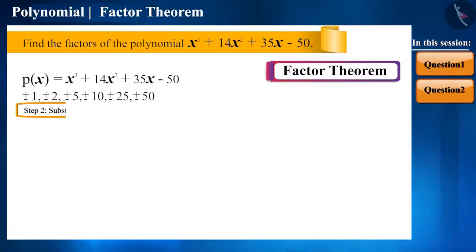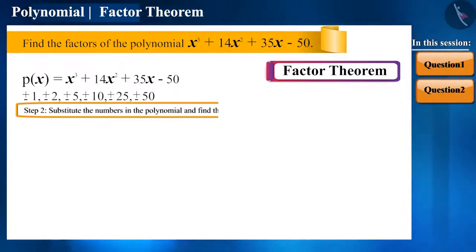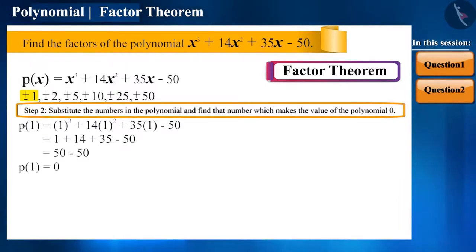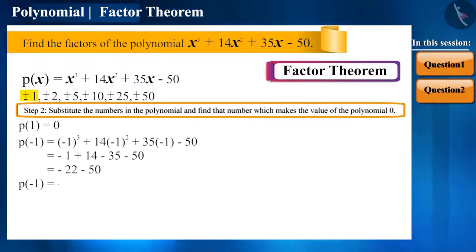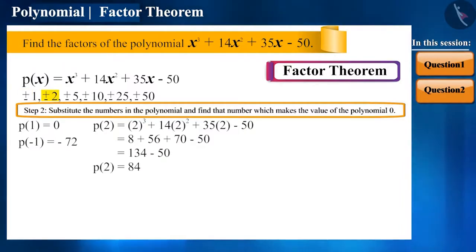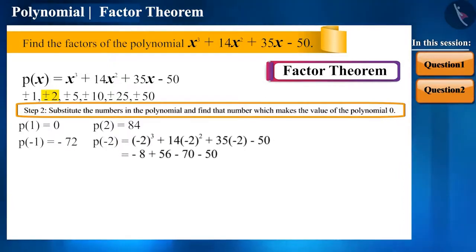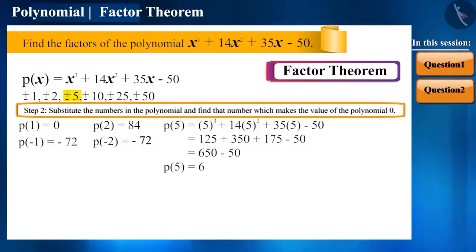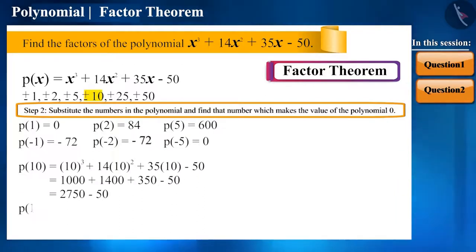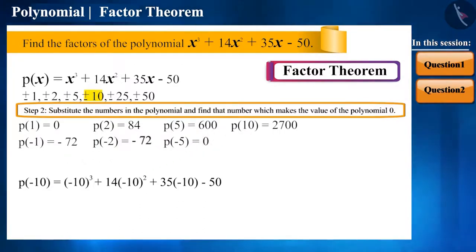And now we come to the second step. One by one, we will substitute these numbers along with their signs in the polynomial and observe which number can make the value of the polynomial 0. So p of 1 becomes 0, p of minus 1 becomes minus 72, p of 2 becomes 84, p of minus 2 equals minus 72, p of 5 is 600, p of minus 5 is 0, p of 10 is 2,700 and p of minus 10 is equal to 0.